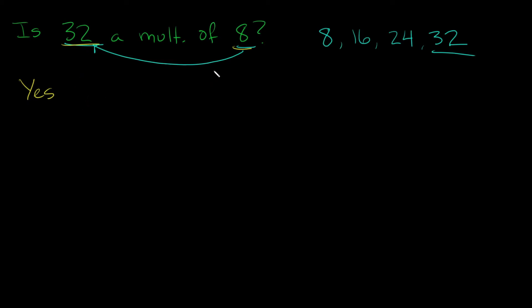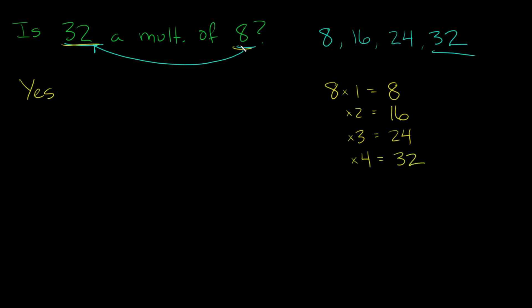How many times does eight fit into thirty-two? Using the multiplication method: eight times one is eight, eight times two is sixteen, eight times three is twenty-four, eight times four is thirty-two. So eight fits into thirty-two four times. We can also see that when counting by eights, we landed on thirty-two on the fourth number — same answer.